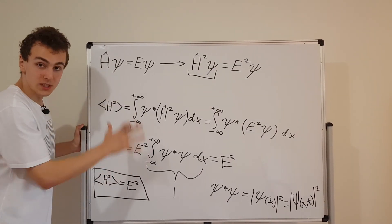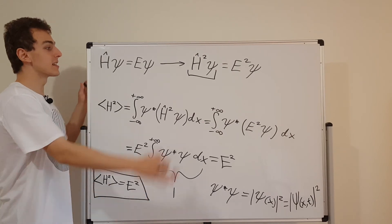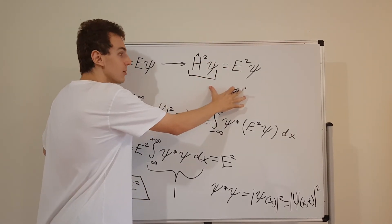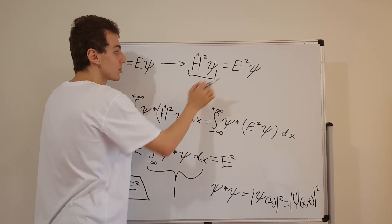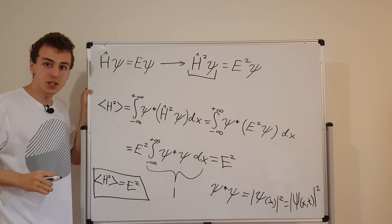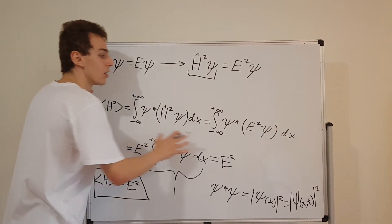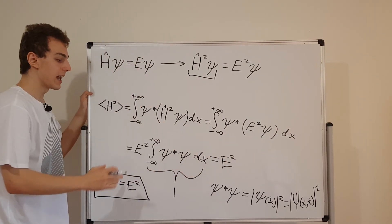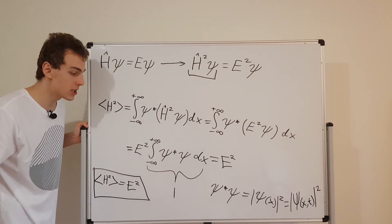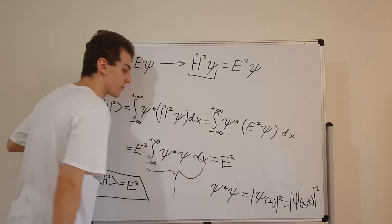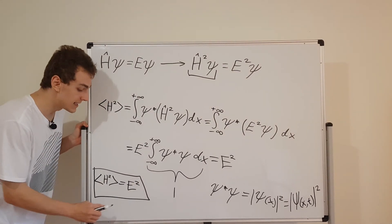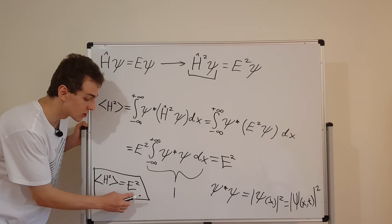So a quick little summary of what we actually did. We used the time independent Schrodinger equation to get this relationship over here between the Hamiltonian squared and E squared, and we substituted this relationship into the integral sandwich. Then we moved the constant outside and we evaluated this integral to one because of the normalization condition, and that gave us E squared. So the expectation value of the Hamiltonian squared is equivalent to E squared.